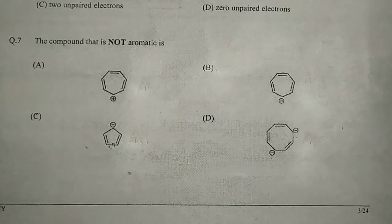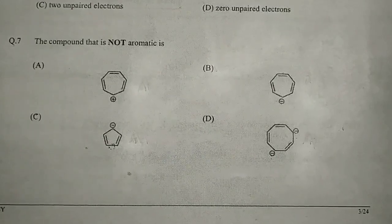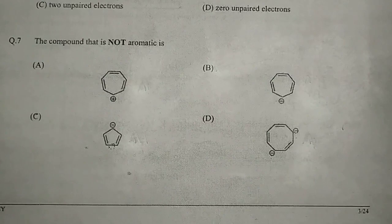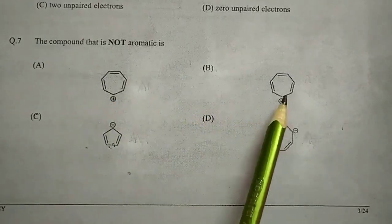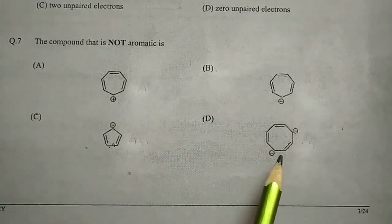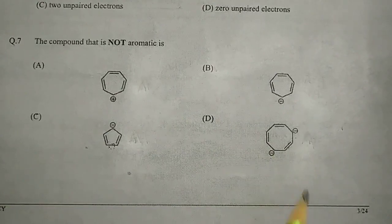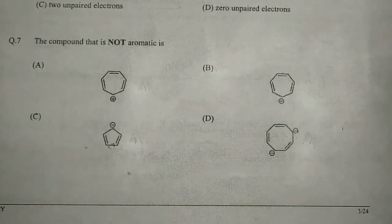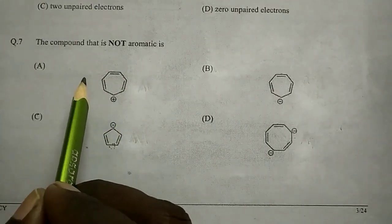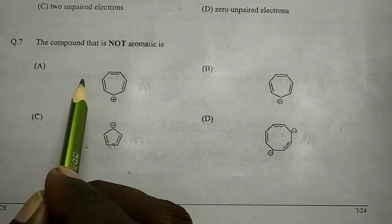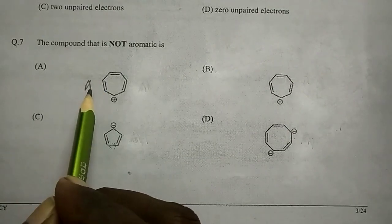The compound that is not aromatic is — there are four ions given: a cation, an anion, another anion, and one more. This last one is a di-anion. We have to find out the one which is not aromatic.